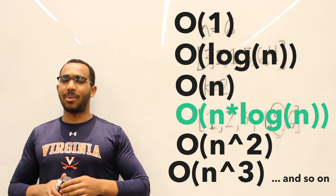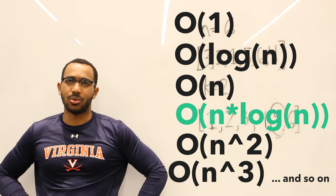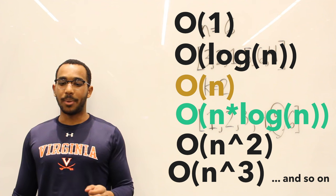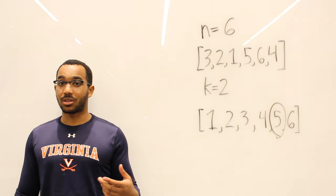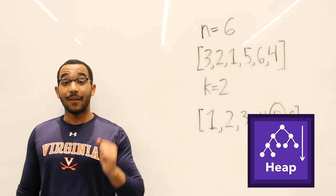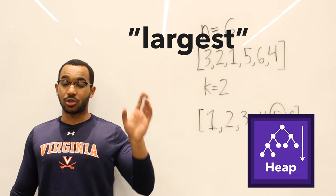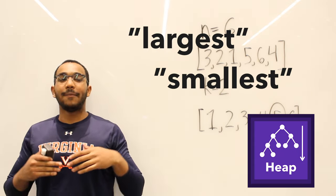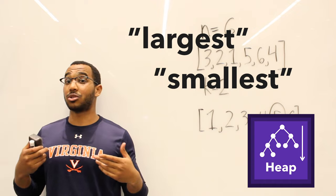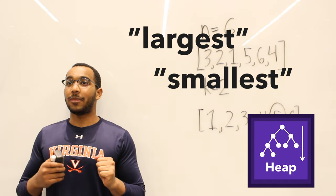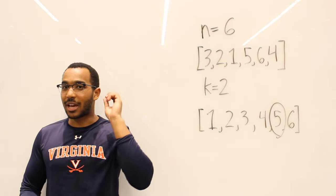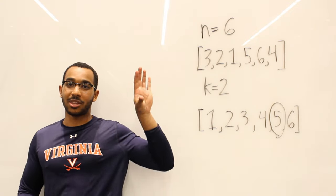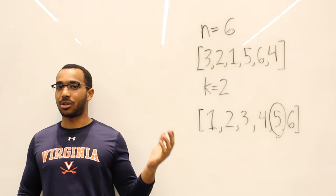So what is the next best thing we can do? We're going to get to linear time eventually, but what we can actually do is a heap-based approach. When we hear 'largest' or 'smallest,' we've seen this pattern several times. Maybe this won't lead you to the most optimal solution, but it's something to bring up in the interview. As soon as you hear these words, you need to immediately be thinking about heaps.